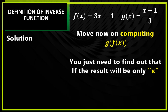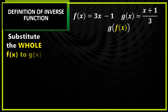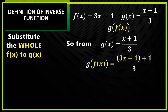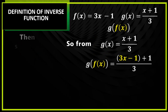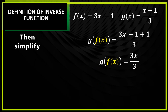Again, ang hahanapin mo rito is if the result will be only x. So g of f of x — i-substitute mo naman dito yung buong f of x doon sa x ng g of x. So from x plus 1 over 3, magiging (3x minus 1) plus 1 over 3. You can remove first the grouping symbols, kasi plus lang naman yung nandoon sa operation. Dahil na-remove na yung grouping symbols, yung minus 1 and plus 1 is equal to 0, so we have 3x over 3. Then cancel the 3, and the remaining expression will become x only.